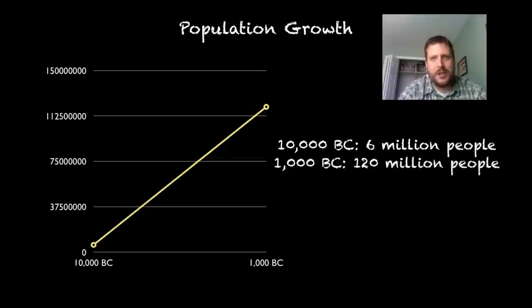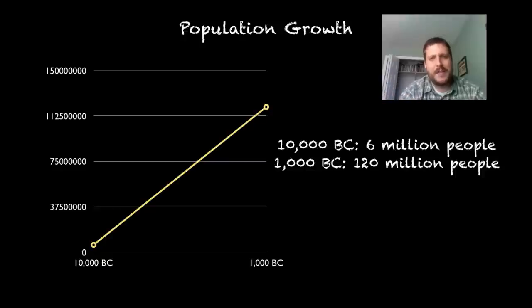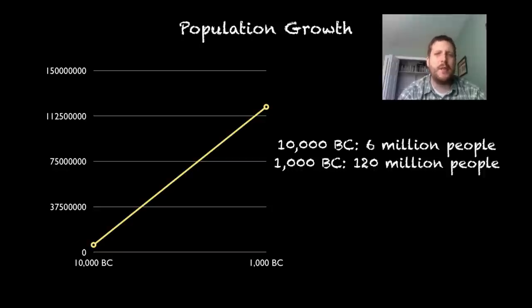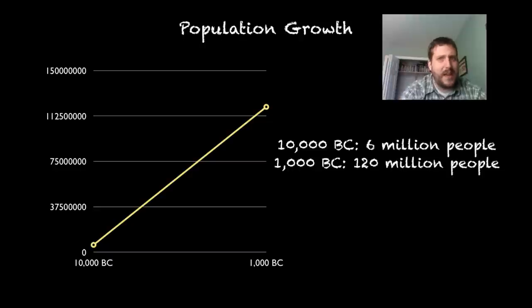The first thing that happened because of the Agricultural Revolution was a huge population spike. We're talking 10,000 BC there were 6 million people on earth, and by 1,000 BC there were 120 million people on earth. That's a huge increase in just around 9,000 years. Big increase in population — that's the first thing that happens because of the Agricultural Revolution.